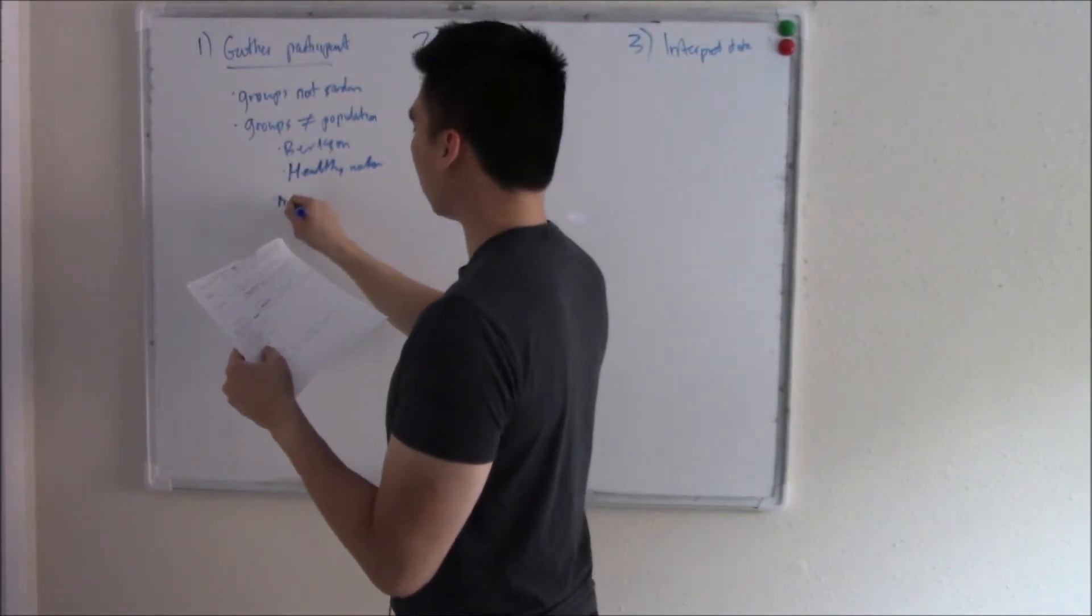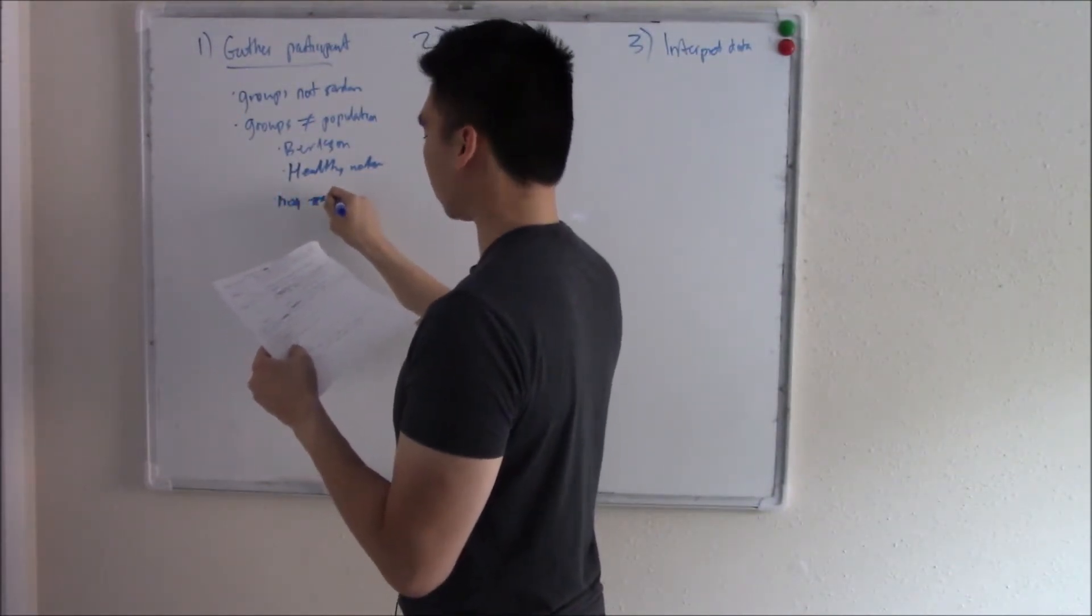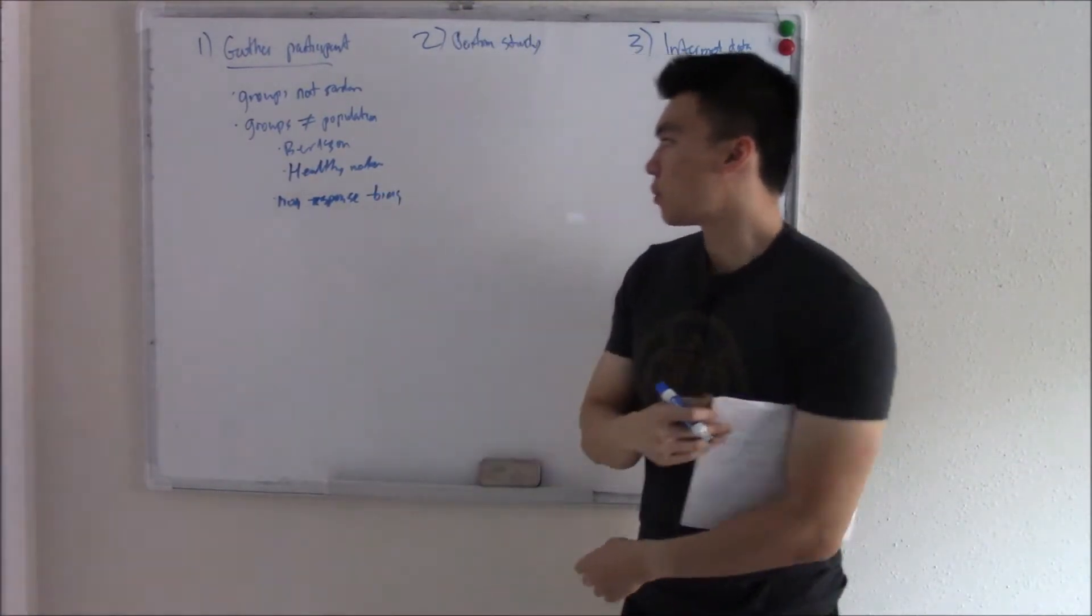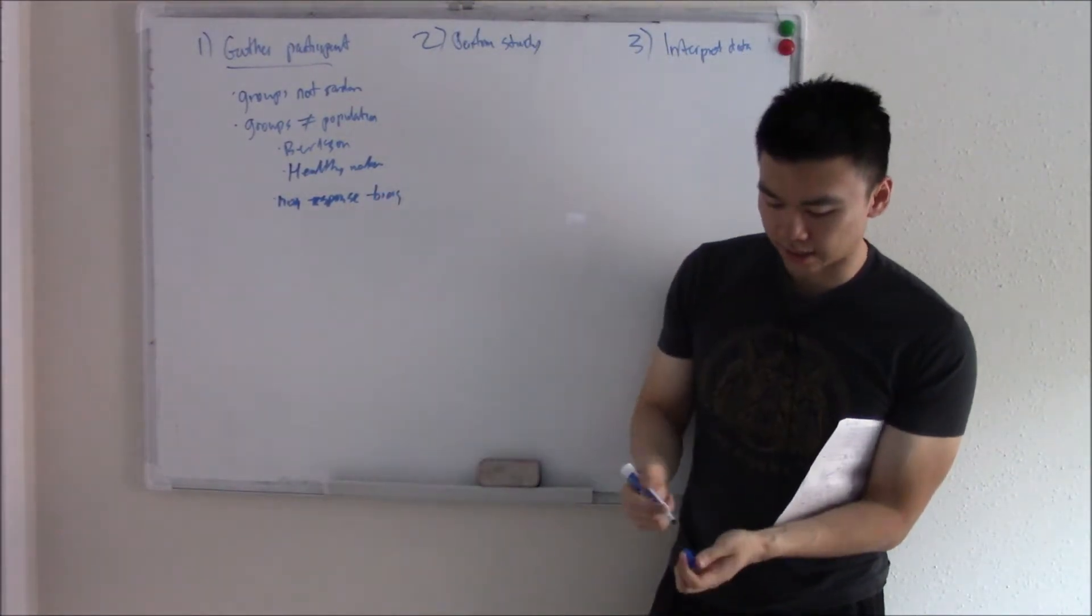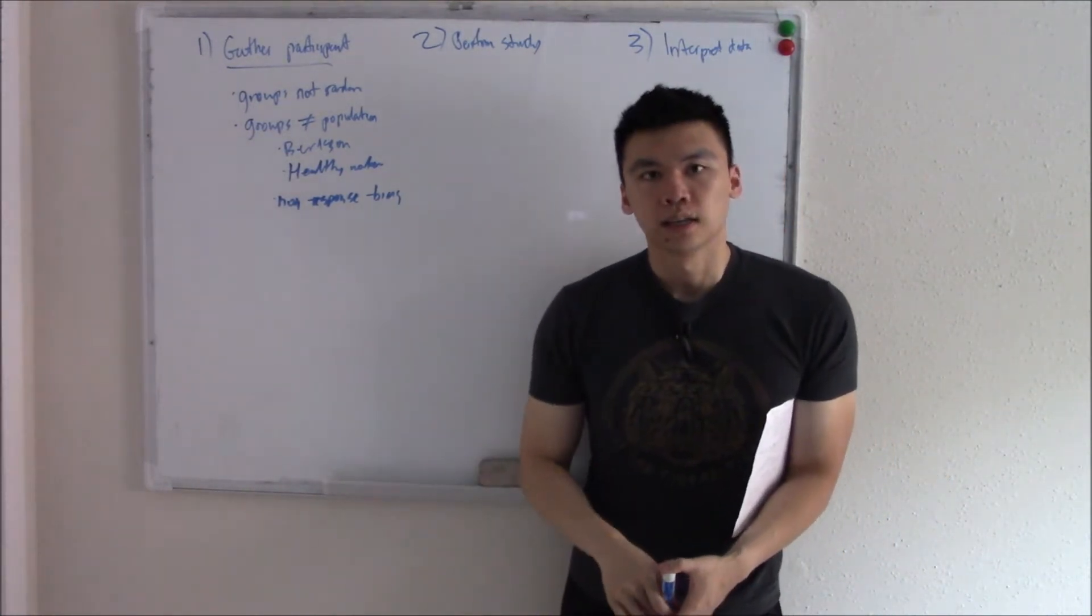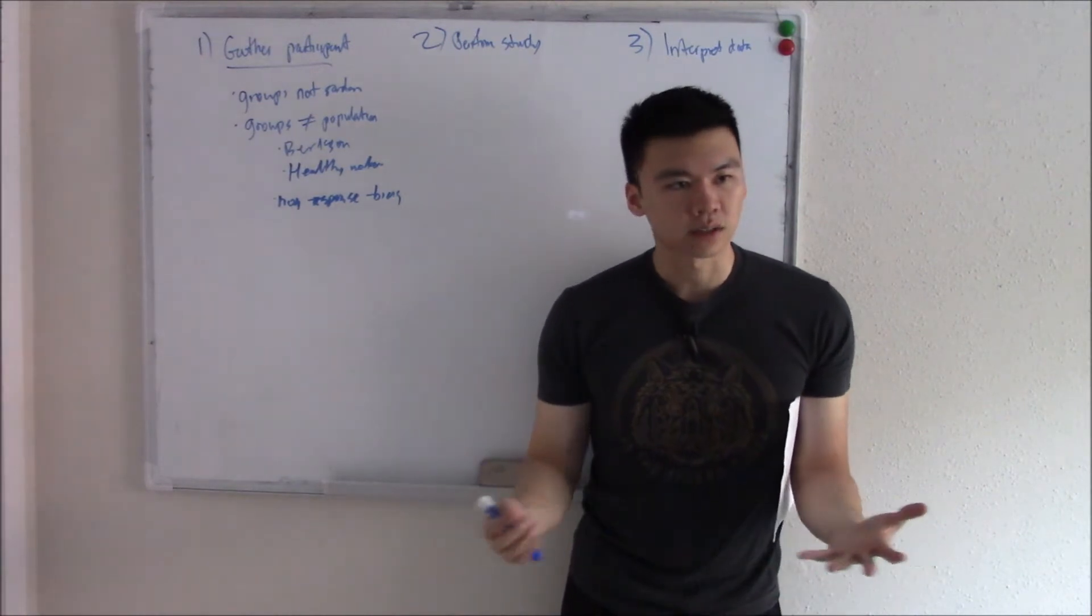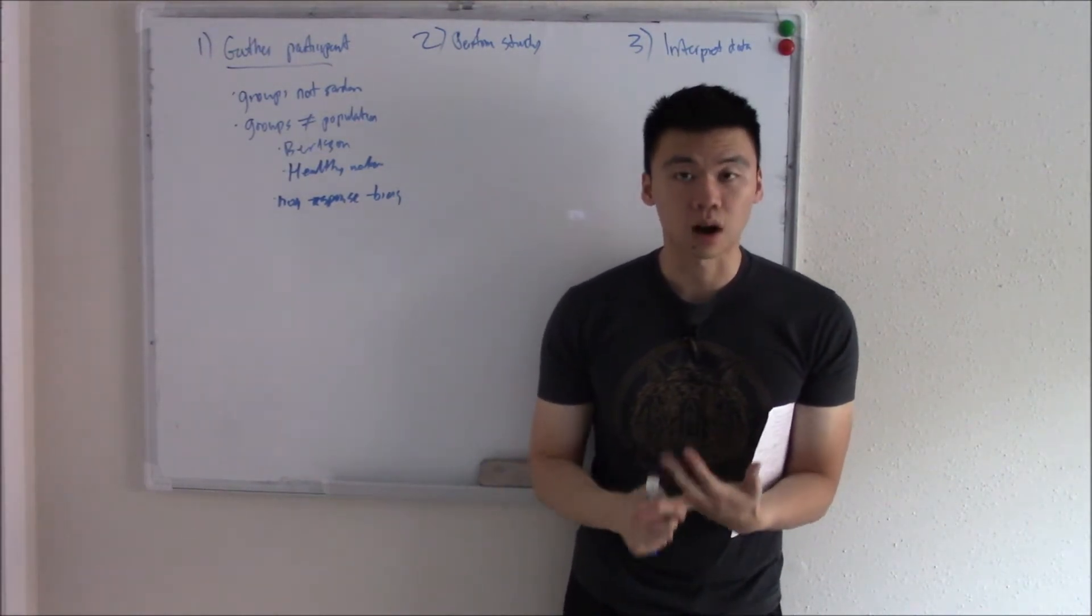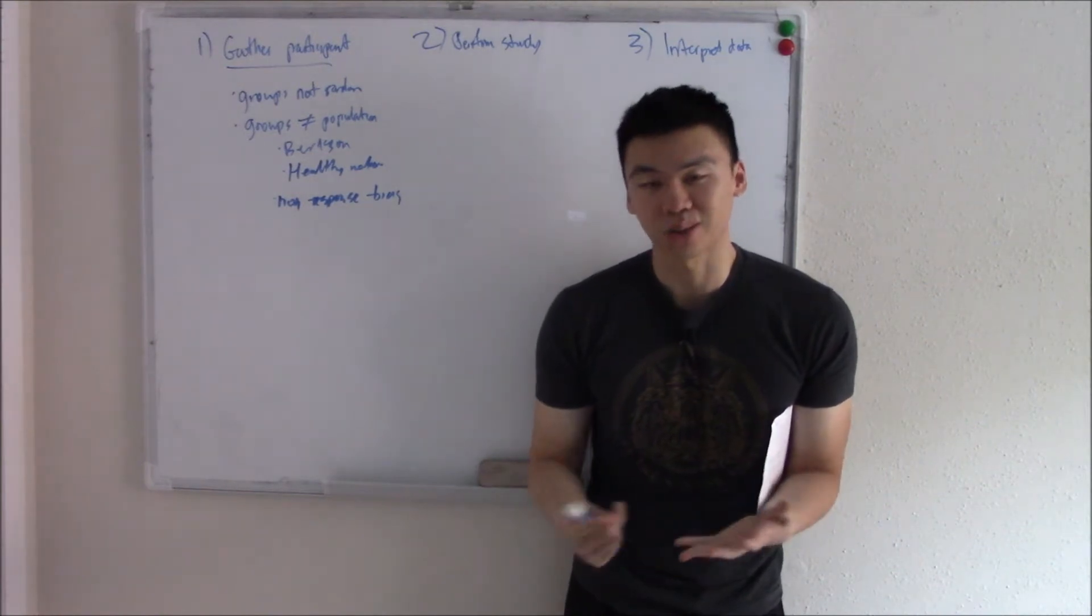There's something called non-response bias. This is when the people that respond to your study differ from the people that don't respond to your study. Classic example, if you put up a poster in your college that says, hey, I'm looking for participants, I'll pay $100 every two hours. You're gonna have a ton of college people signing up because they're broke, they need that money.